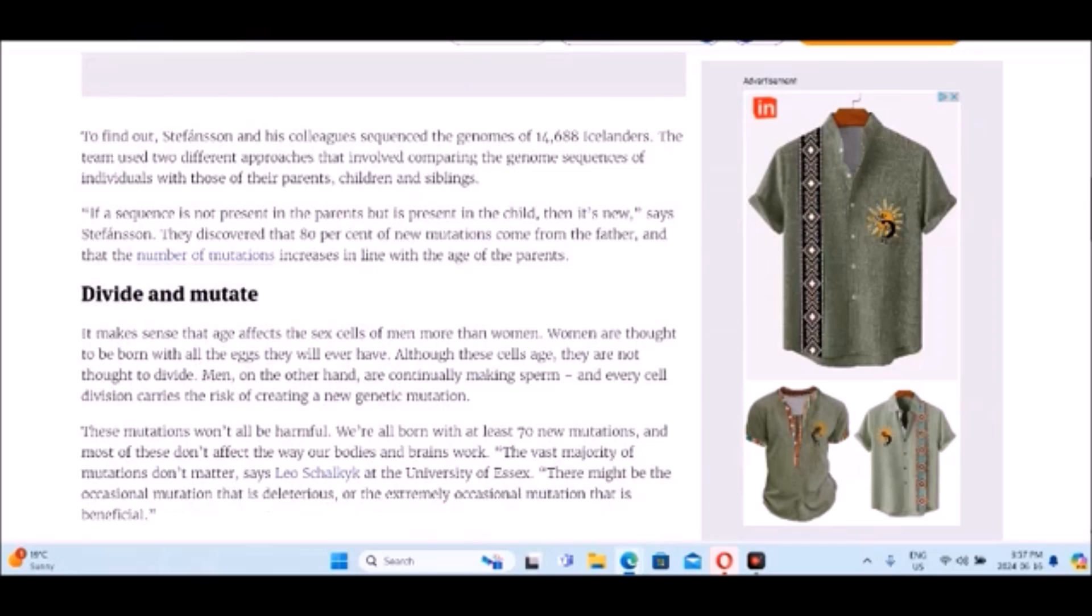To find out, Stefansson and his colleagues sequenced the genomes of 14,688 Icelanders. The team used two different approaches that involved comparing the genome sequences of individuals with those of their parents, children, and siblings. If a sequence is not present in the parents but is present in the child, then it's new. They discovered that 80% of new mutations come from the father and that the number of mutations increases in line with the age of the parents.